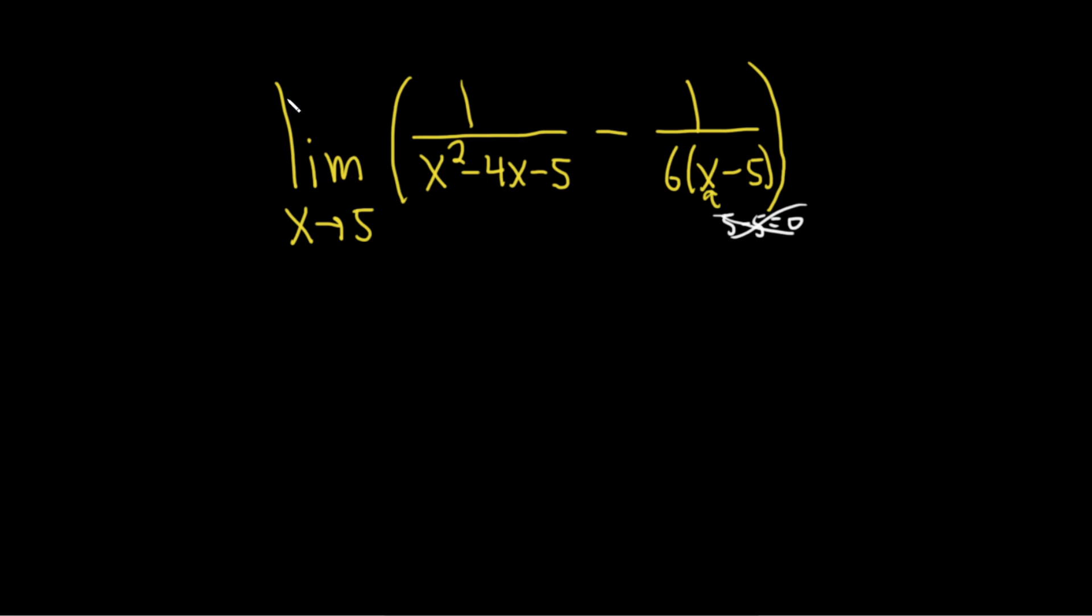So we need to do something else, and that something else is going to be factor. So let's go ahead and rewrite this and factor this piece here. This is the limit as x approaches 5.